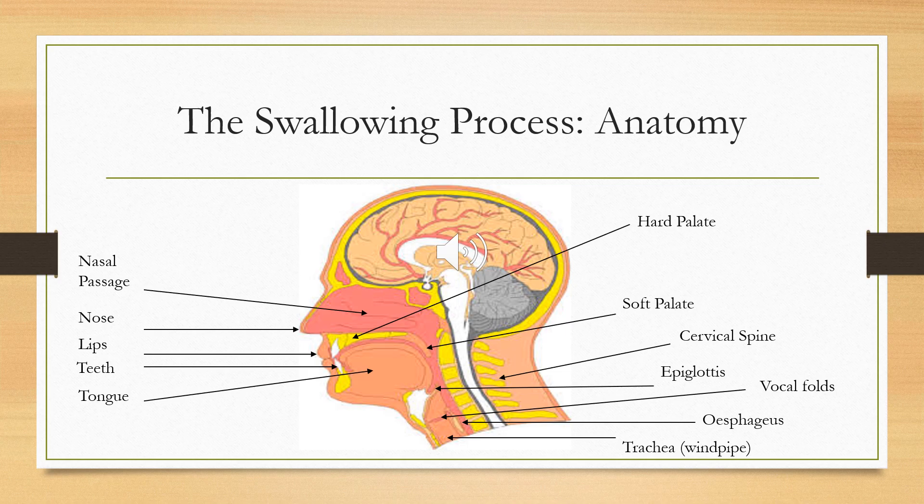If we look at the top right-hand side of the page, we'll see the hard palate. If you run your tongue along the roof of your mouth, you'll feel your hard palate, and then as it gets softer towards the back of your mouth, that's your soft palate. Underneath there we have the cervical spine — if you get your hand and run it up and down the base of your neck to around your hairline, you'll feel where your cervical spine is around that area.